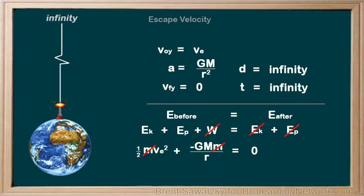We can cancel out the m's, that is, the mass of our object, which apparently doesn't impact the escape velocity, and with some rearranging, we can solve for our escape velocity, ve.